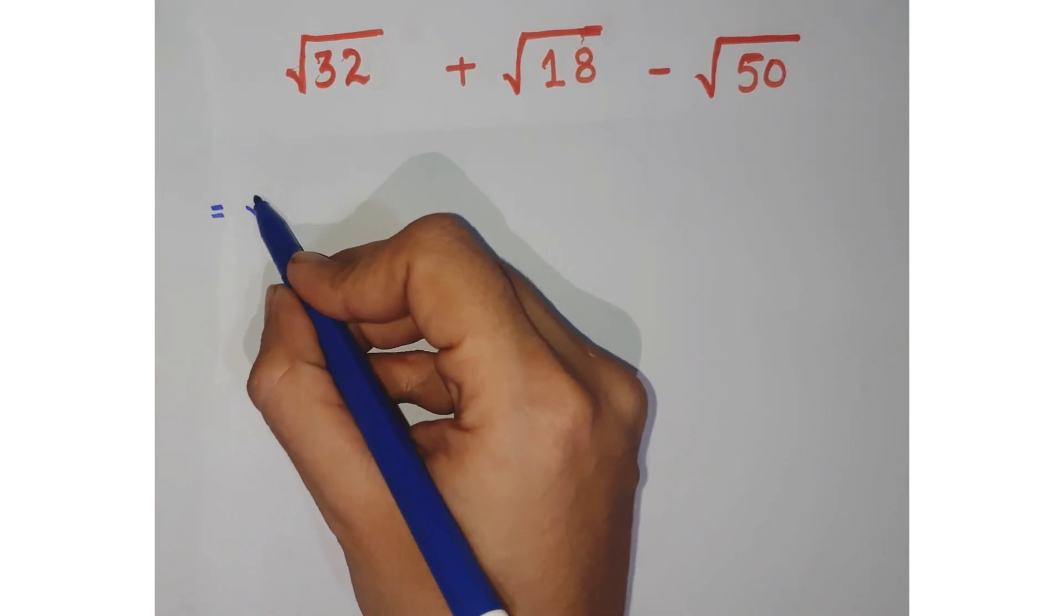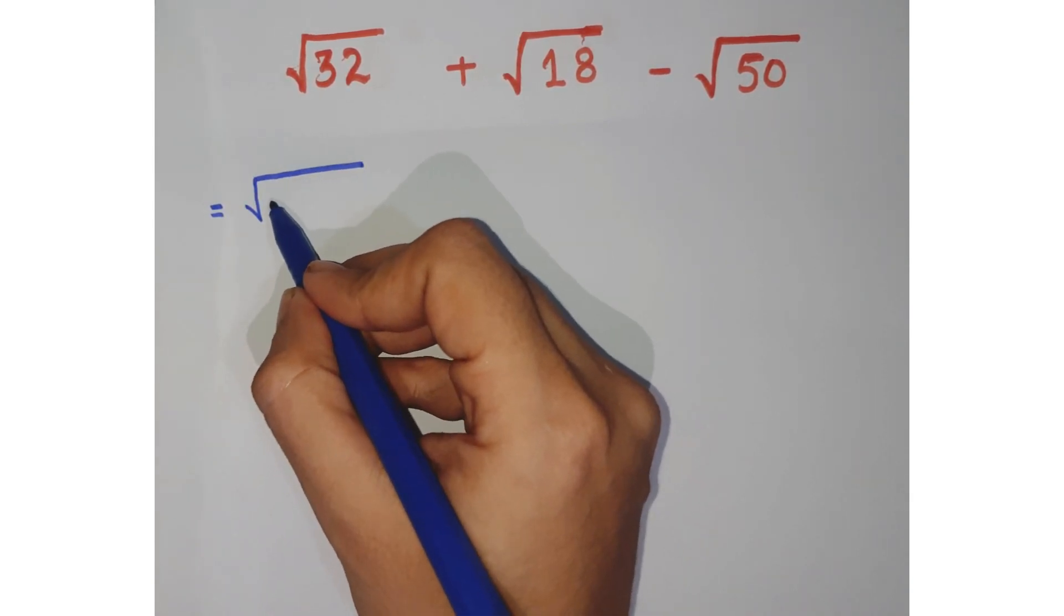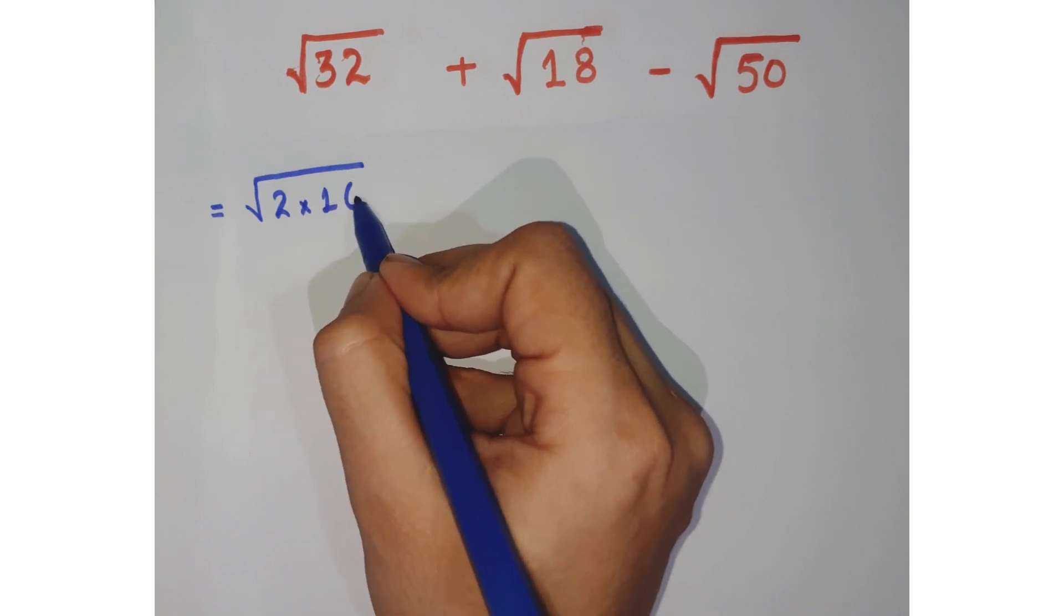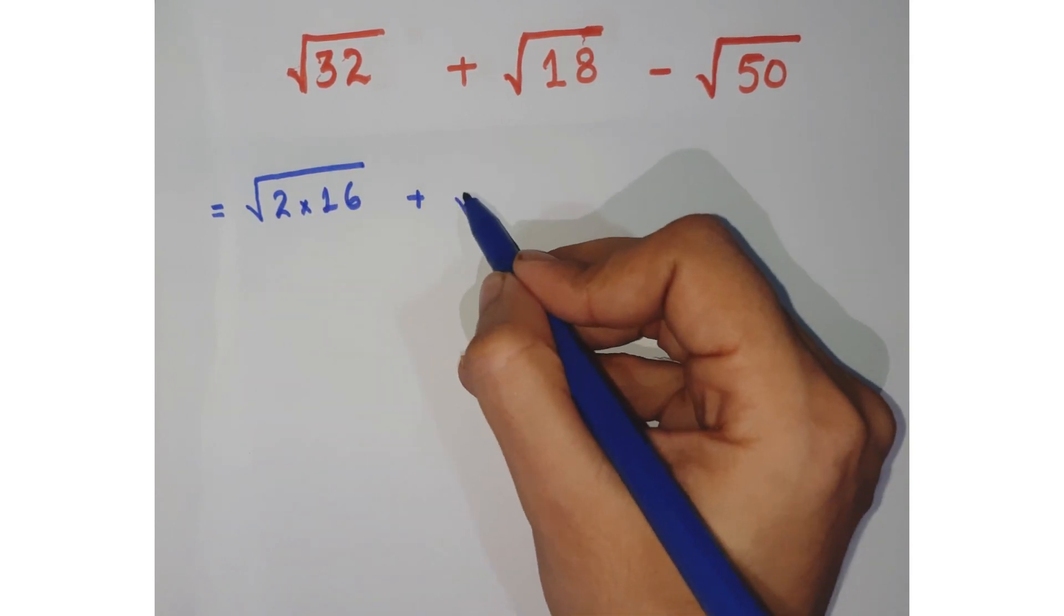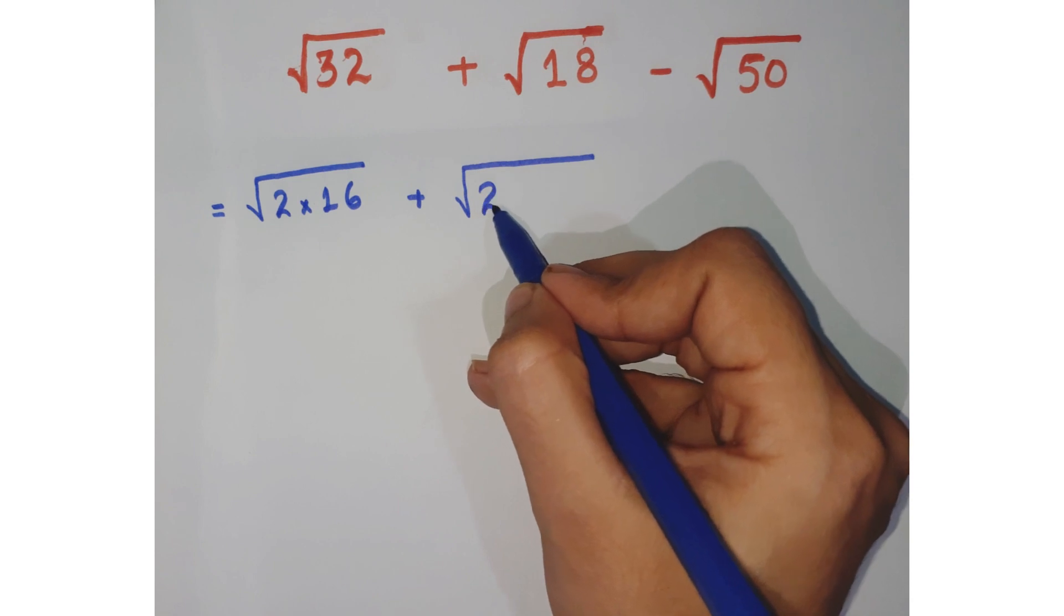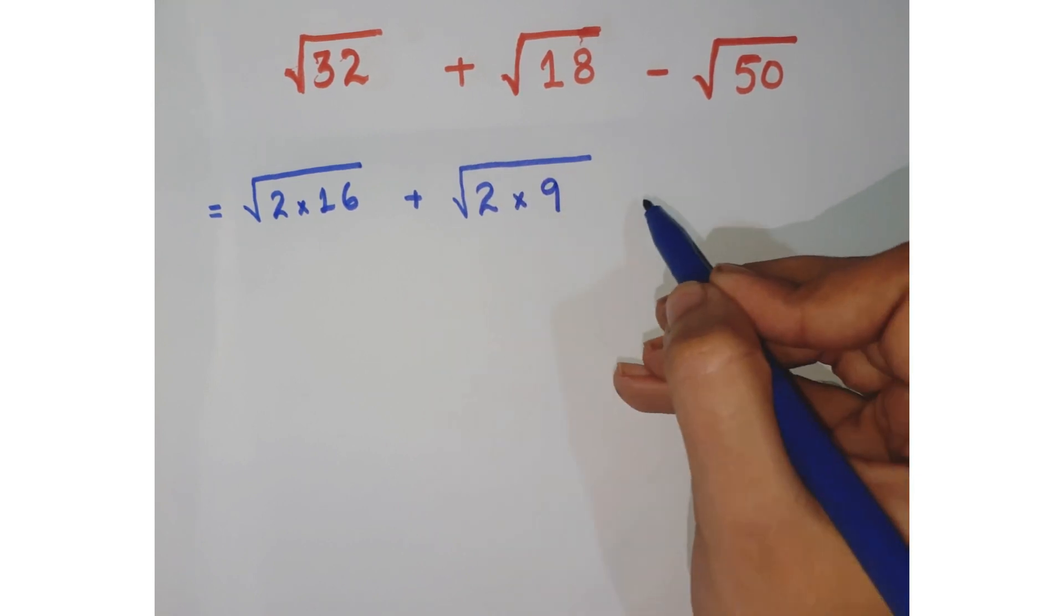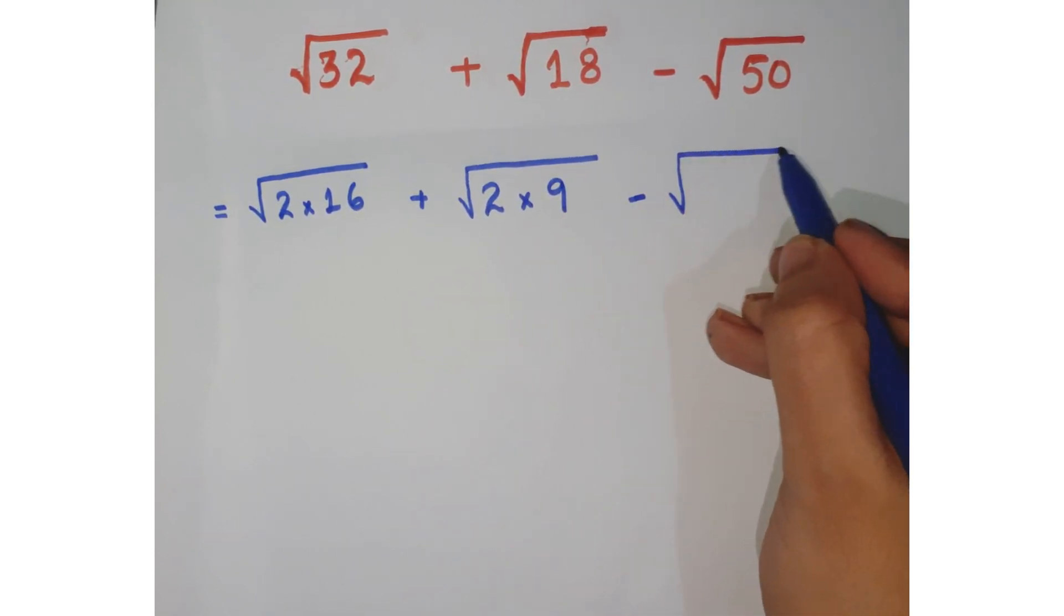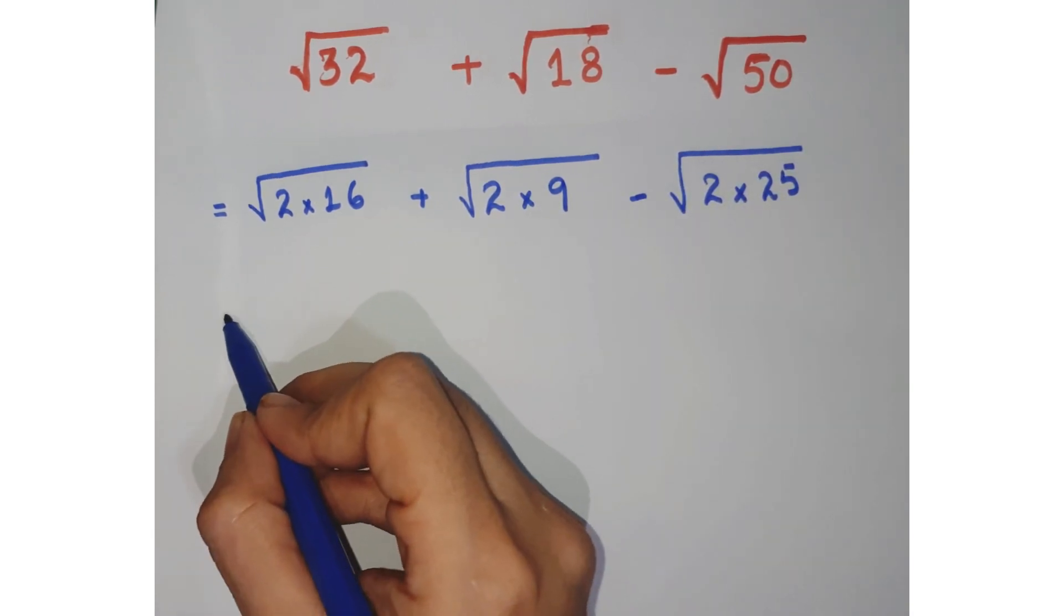First of all, you can just write 32 as 2 × 16. Similarly, you can write 18 as 2 × 9, minus this 50 can be written as 2 × 25.